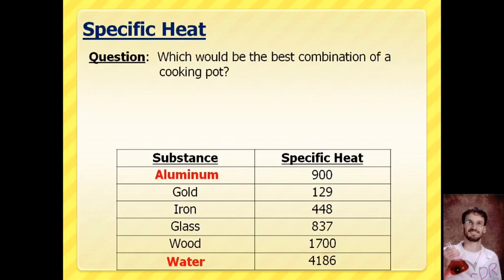Discussion question: what would make the best combination for a cooking pot? You want the metal of the pot to heat up quickly so you don't have to wait, but you want the handle to not heat up so you can grab it and move the pot around. Which material from the specific heat chart would you choose for each part?